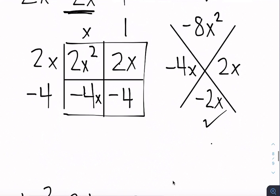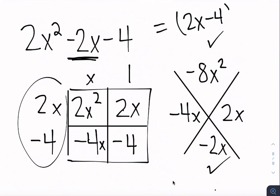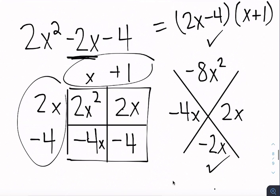So now I can say that this is really equal to 2x minus 4 multiplied by x plus 1. And I get those numbers from the side. Let's try one more together.